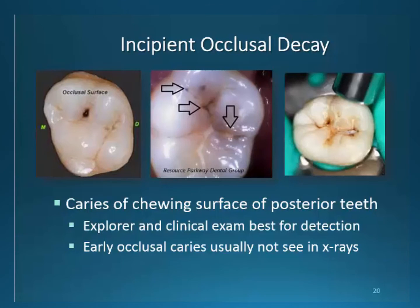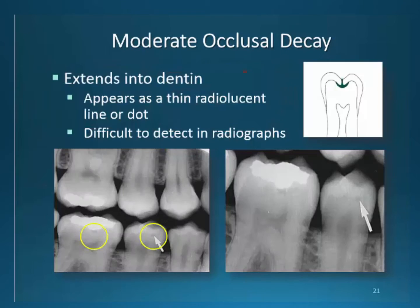Occlusal decay is located at the center of the tooth on the chewing surfaces. Visual exams and explorers are best used to detect this decay. This classification is not seen on radiographs. Moderate occlusal decay may be seen on radiographs but is easily overlooked. They appear as small, oval, darkened areas immediately below the occlusal enamel junction and dentin. They vary in size and are limited to one half the distance from the enamel-dentinal junction to the midline of the dentin.